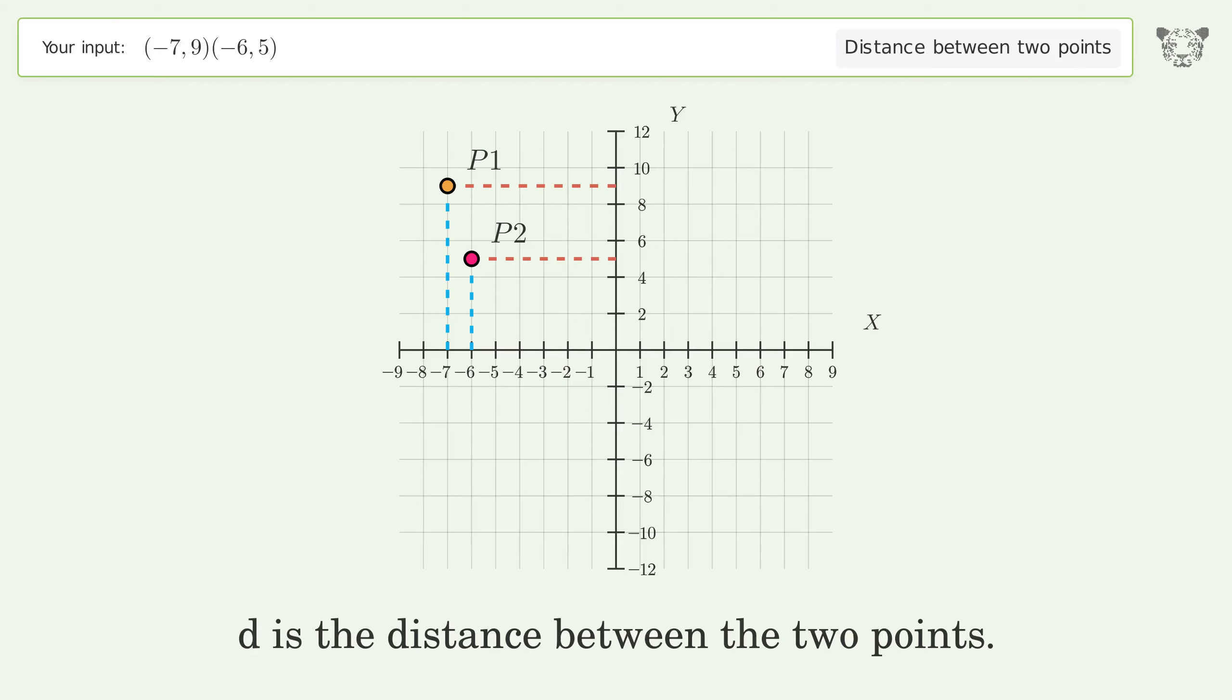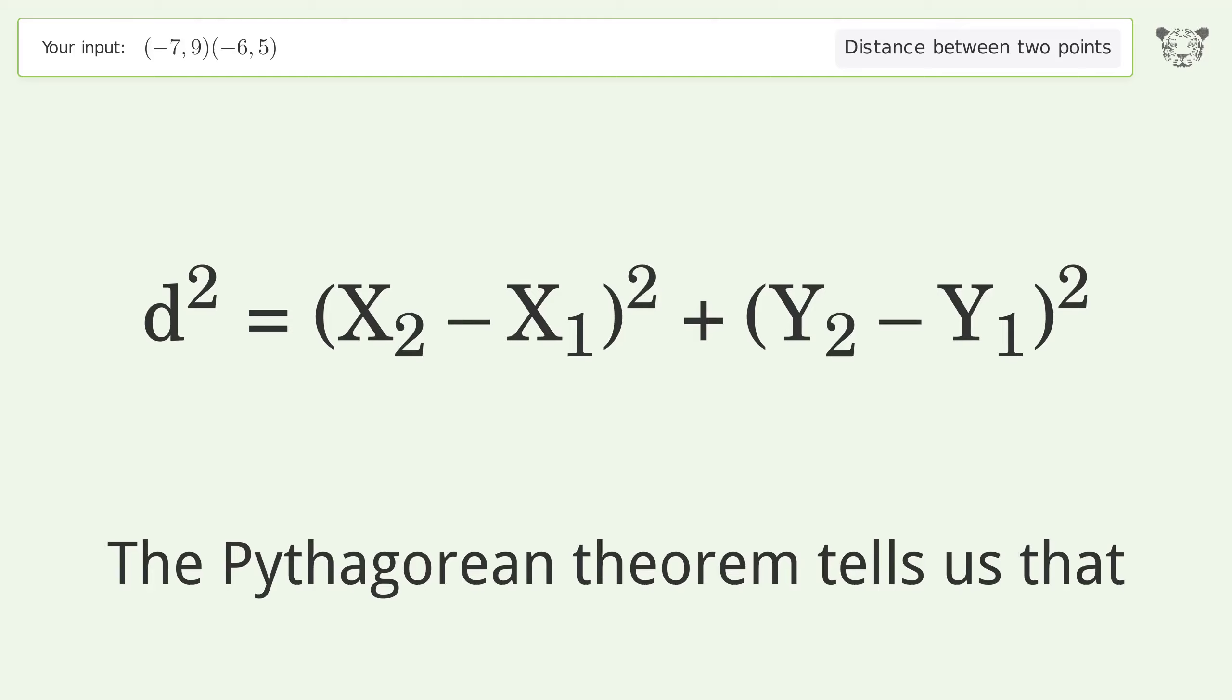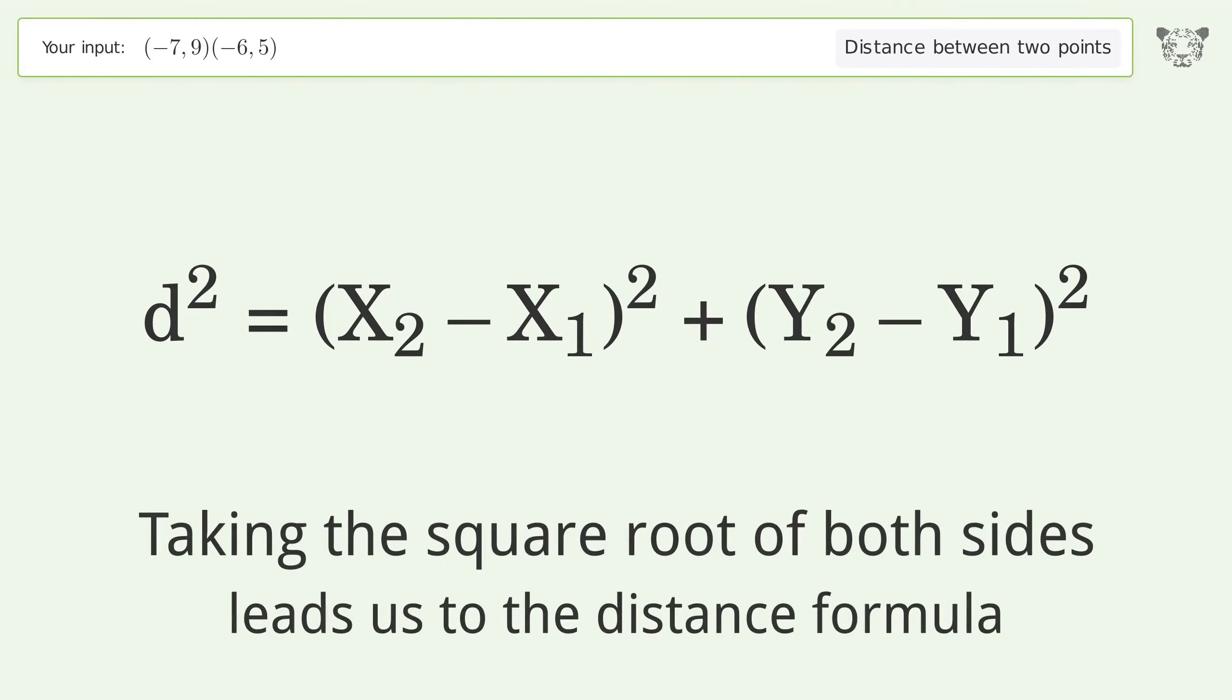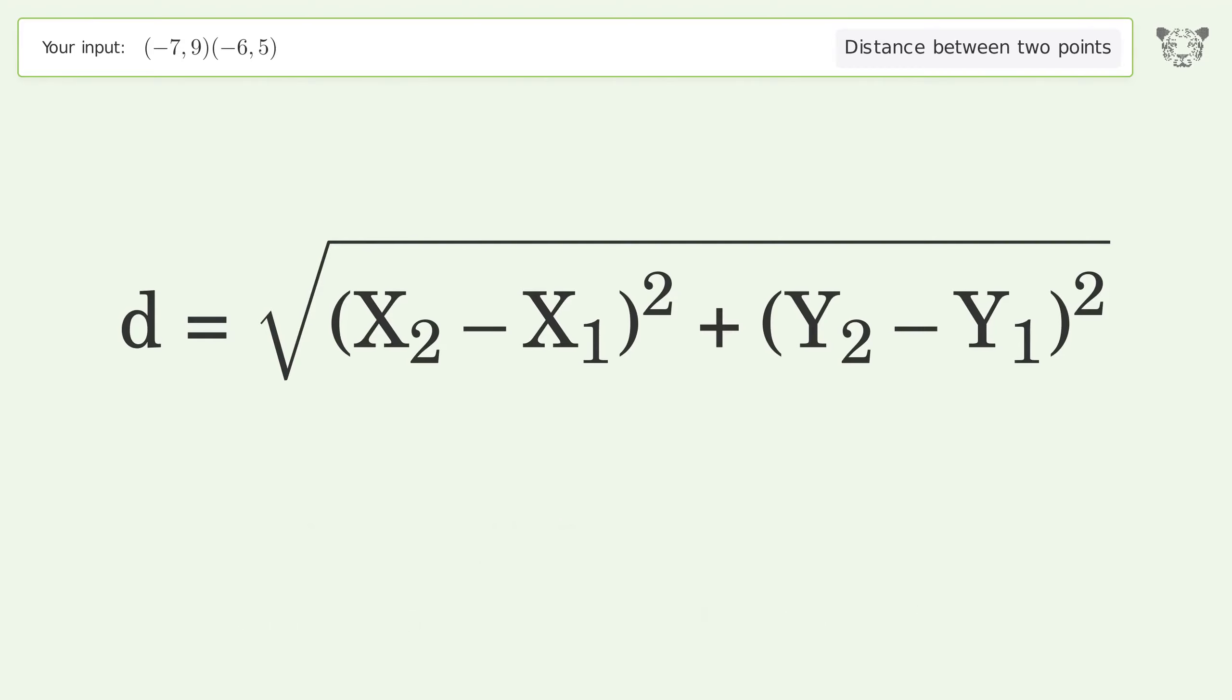d is the distance between the two points. The Pythagorean theorem tells us that taking the square root of both sides leads us to the distance formula.